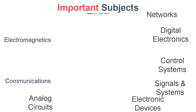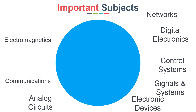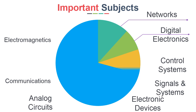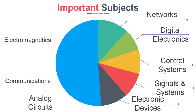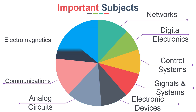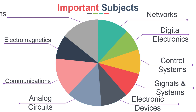You should be able to prepare these subjects in the next 10 months. Assuming this complete time is 100%, ideally give 10% to Networks, 7% to Digital Electronics, 10% each to Control Systems and Signal and Systems, 10% to Electronic Devices, 13% to Analog Circuits, 15% to Communications, 10% to Electromagnetics, and the remaining 10% to Maths and Aptitude.